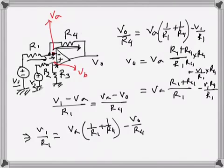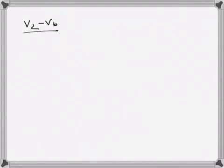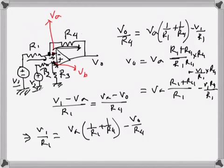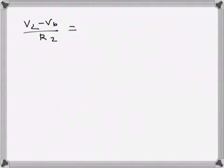That was from applying KCL at node va. Now writing KCL at node vb gives us: (v2 - vb) / r2 = vb / r3. So v2 / r2 equals vb / r3.